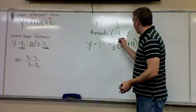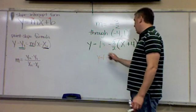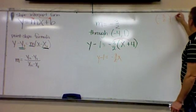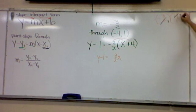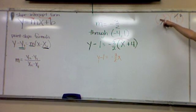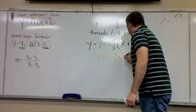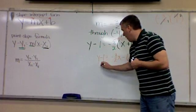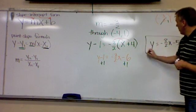Now I need to simplify. First, I'm going to distribute. Negative 3 halves times x is negative 3 halves x. Then negative 3 halves times 4 over 1 — 2 and 4 reduce to 1 and 2 — so negative 3 times 2 is negative 6. So this becomes minus 6. In order to have it in slope-intercept form, y needs to be alone. Add 1 to both sides, and I get y equals negative 3 halves x minus 5.